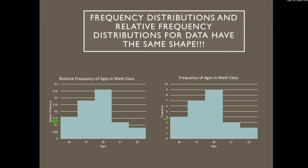There was 0.16 proportion of 18-year-olds, but there were 4 18-year-olds in my course. And they have the same shape, which is super important. That should be a really key takeaway.